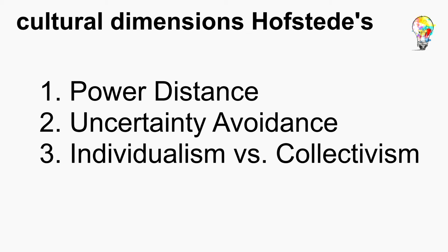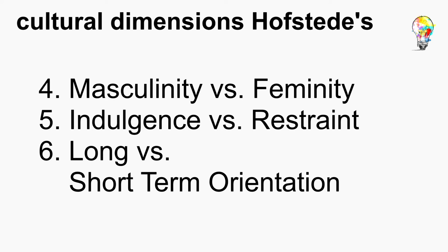Hofstede differentiates between six different dimensions: Number 1, Power Distance; Number 2, Uncertainty Avoidance; Number 3, Individualism vs. Collectivism; Number 4, Masculinity vs. Femininity; Number 5, Indulgence vs. Restraint; Number 6, Long vs. Short-term Orientation.